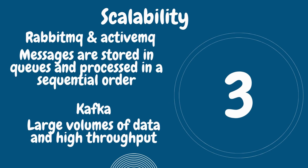Number three is scalability. Kafka is designed to handle large volumes of data and high throughput, making it a good choice for real-time data streaming and processing. RabbitMQ and ActiveMQ are better suited for traditional messaging patterns where messages are stored in a queue and processed in sequential order.